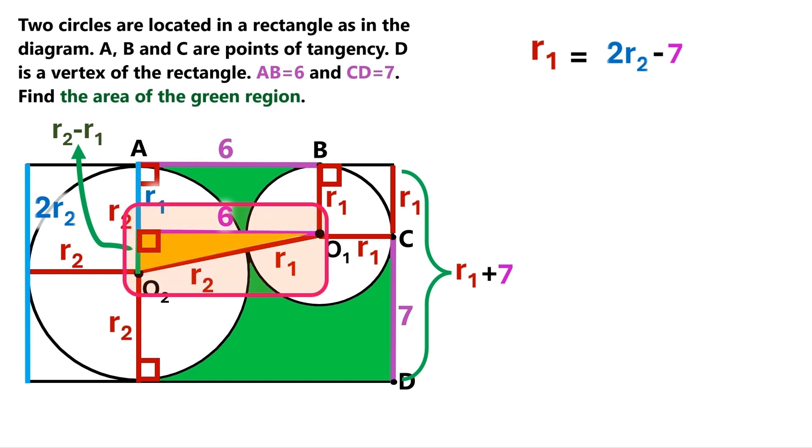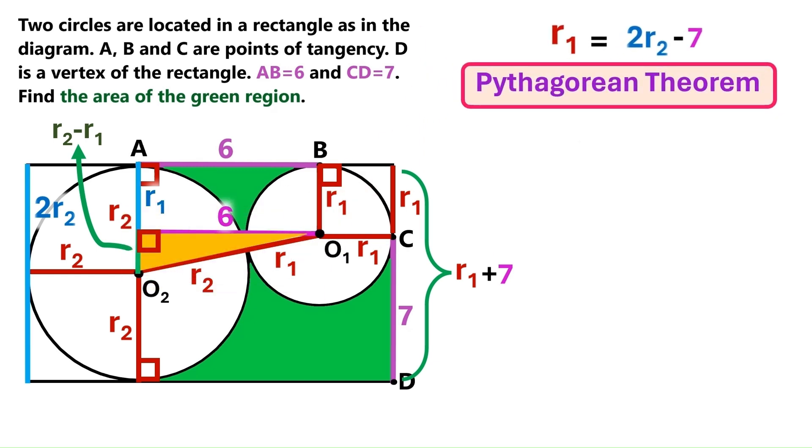So we've got this yellow right triangle here. And that allows us to use the Pythagorean theorem, which states that the sum of the squares of the shorter sides of a right triangle equals the square of its longer side.